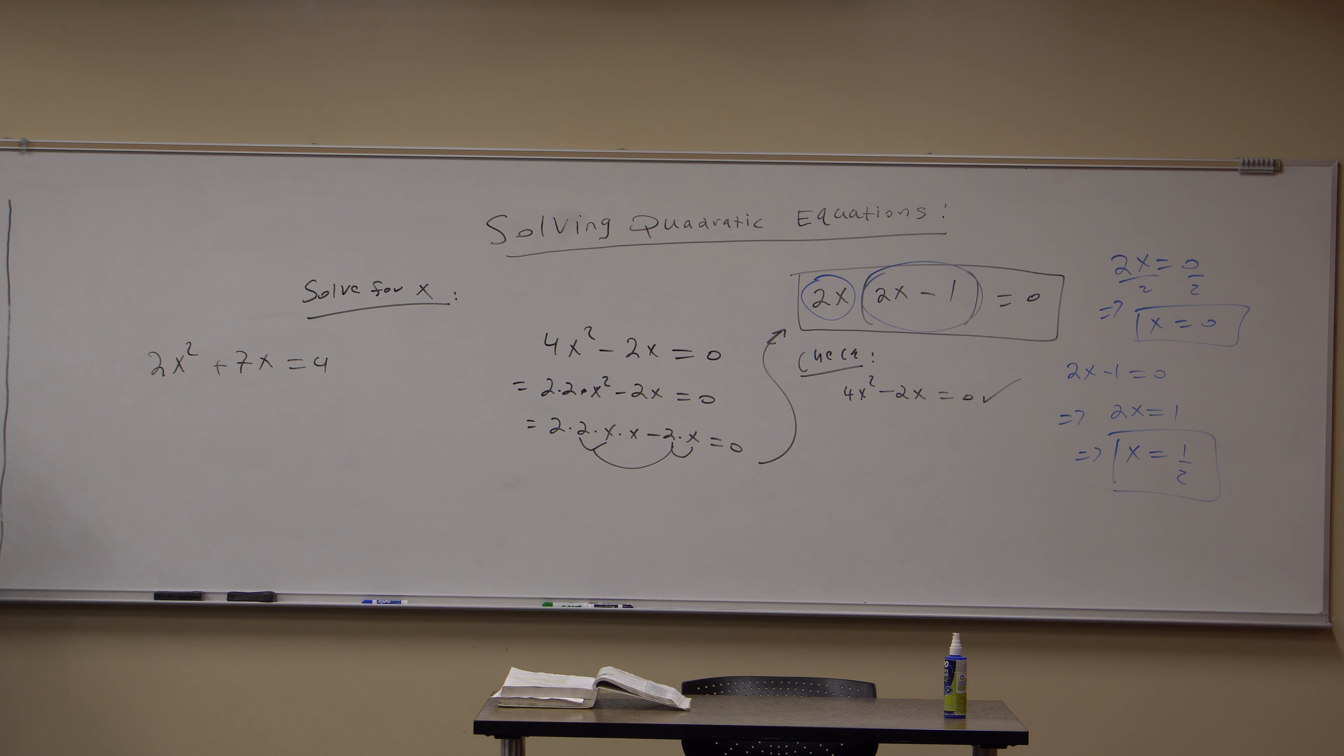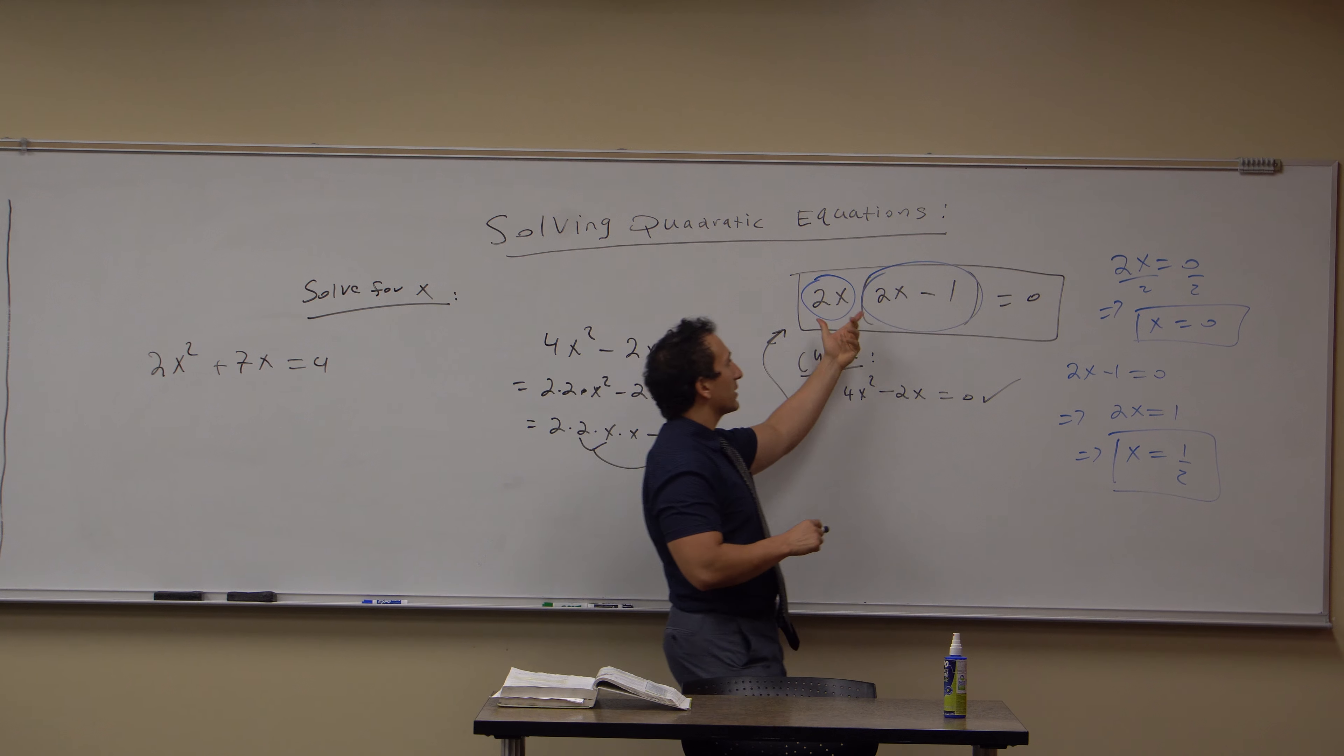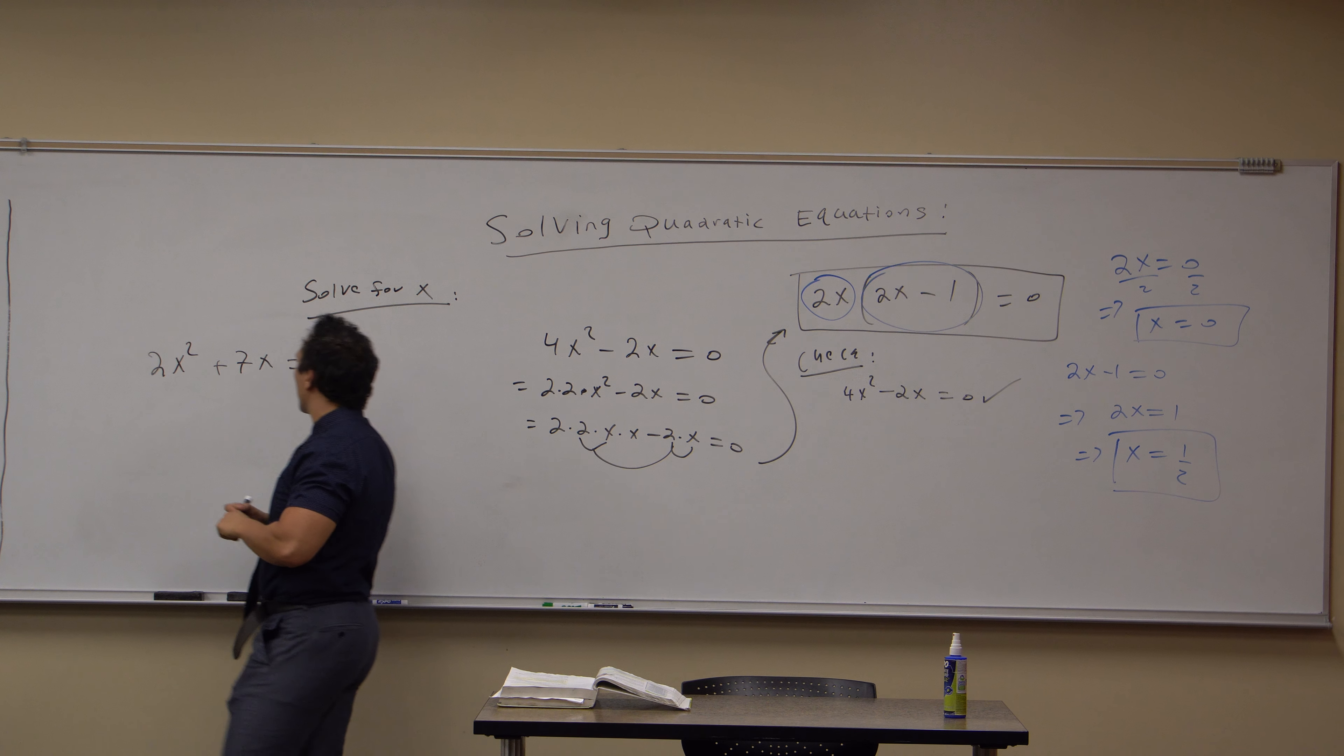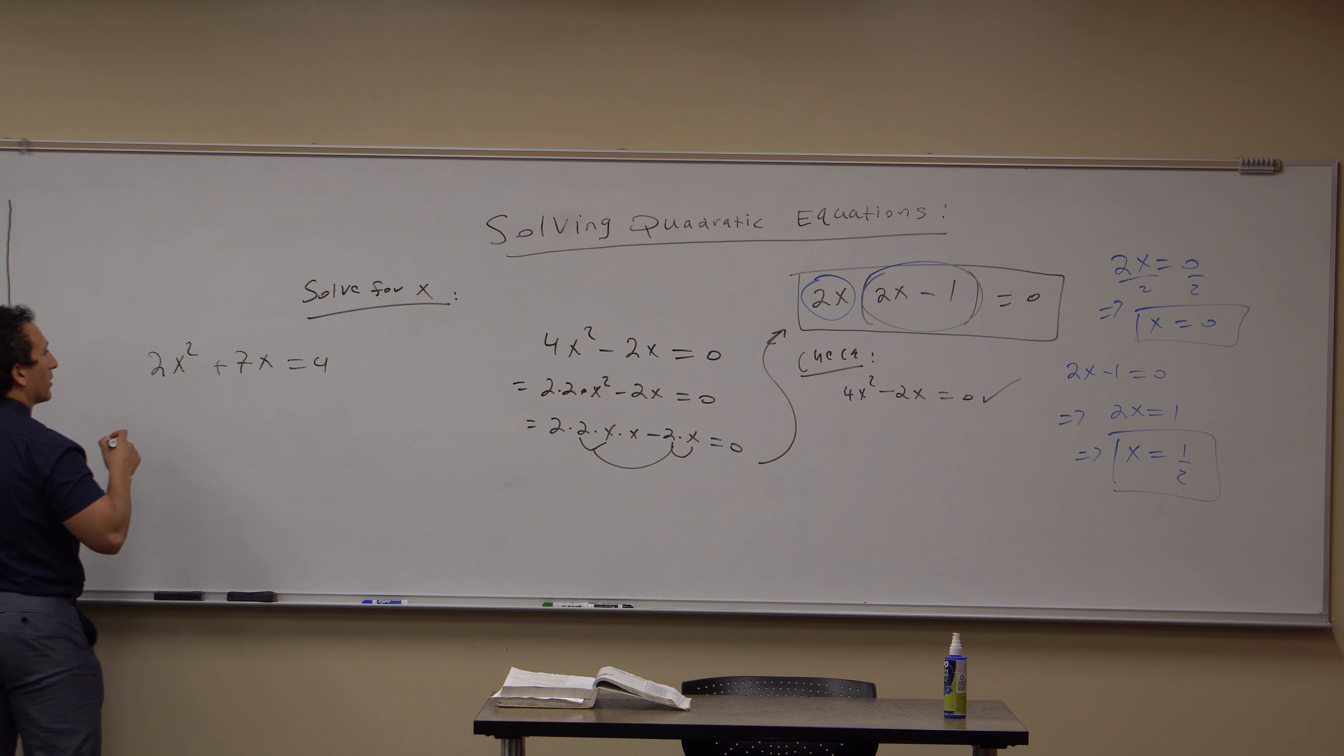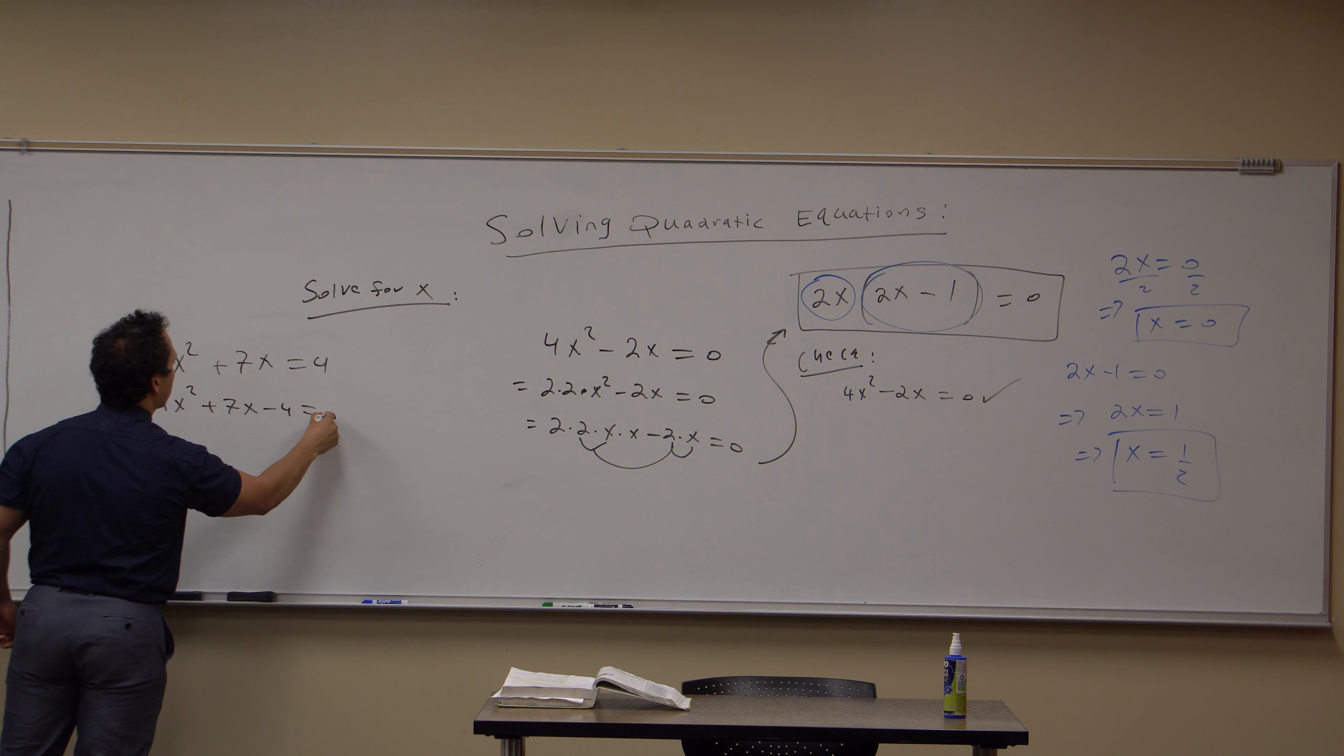Now, we can't do this whole trick of pulling something out and utilizing this zero principle rule. We actually have to bring this over here, this constant term. We get 2x² + 7x - 4, set this equal to 0.